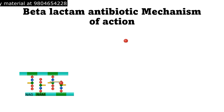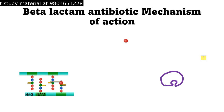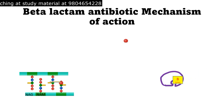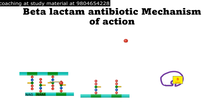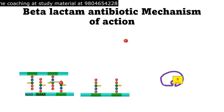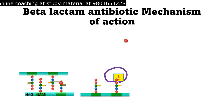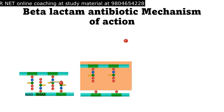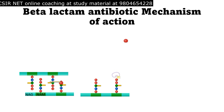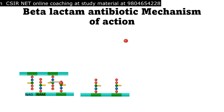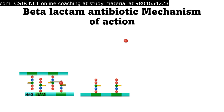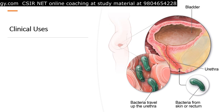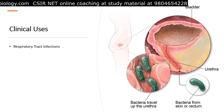When bacteria are treated with beta-lactam antibiotic, the antibiotic binds to the active site of the transpeptidase on the penicillin-binding protein. This prevents the cross-linking event from occurring. The PBP can no longer perform cross-linking, so no peptidoglycan structure is formed, no cell wall is built, and as a result the bacteria die.